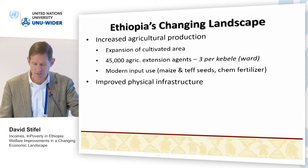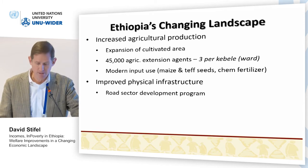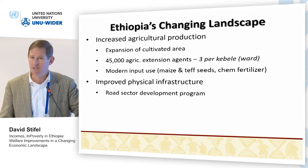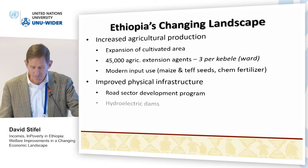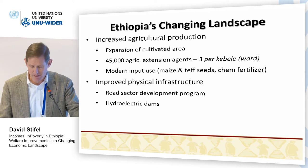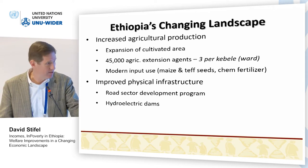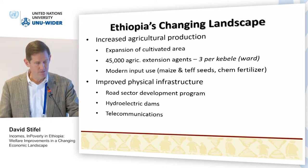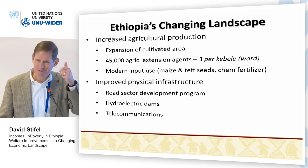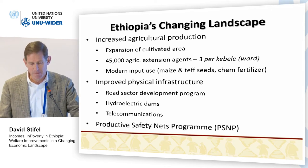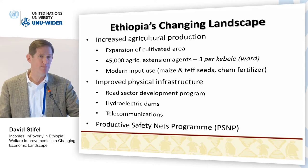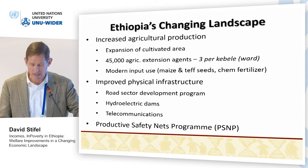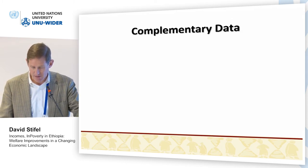Improved infrastructure has also appeared to contribute: the Road Sector Development Program has resulted in thousands of kilometers of roads being built, integrating wholesale markets across the country. Building hydroelectric dams provides the possibility of more electricity, though electrification remains quite low in rural areas. Telecommunications — the availability of cell phones in very remote survey areas, where you could go up a hill and get a signal — improves communication across markets. The Productive Safety Nets Program, introduced in 2005, has also appeared to provide stability in terms of food security and investment in agriculture.